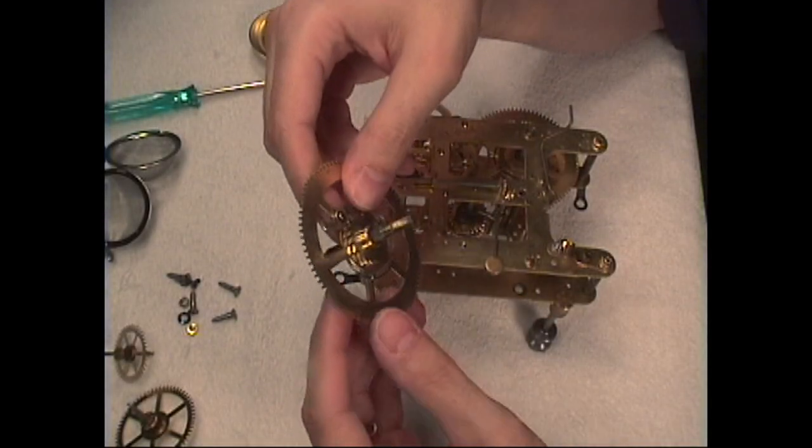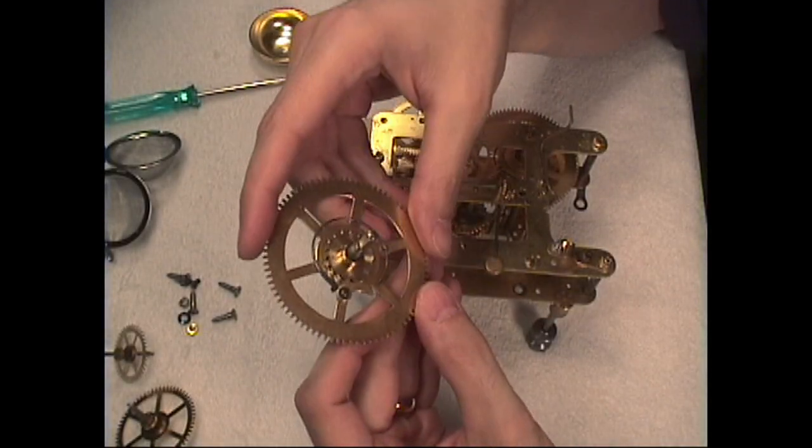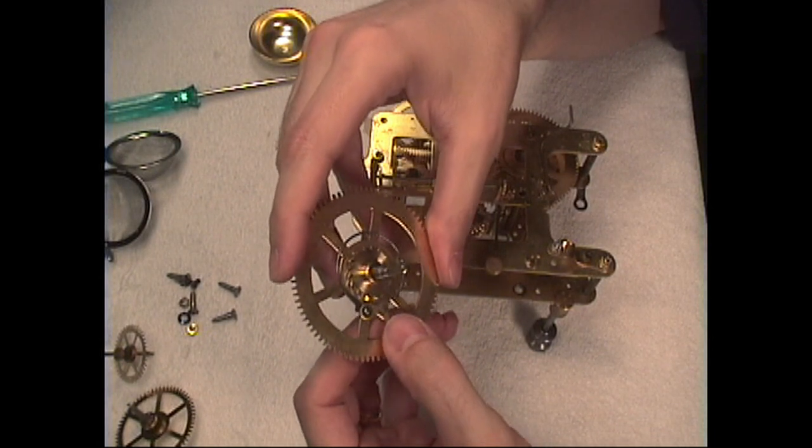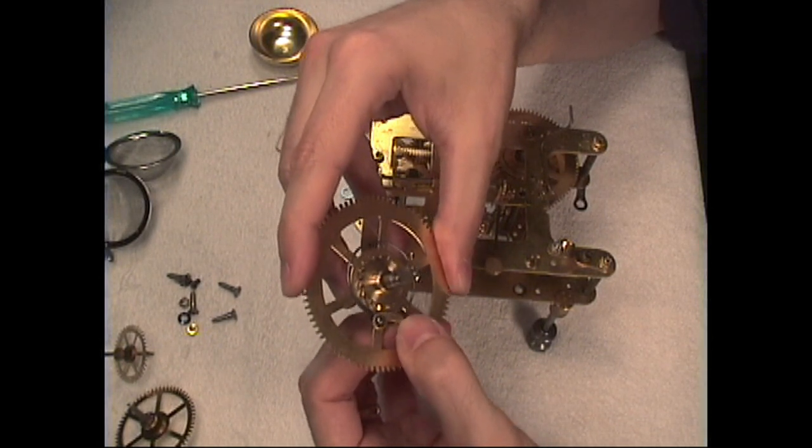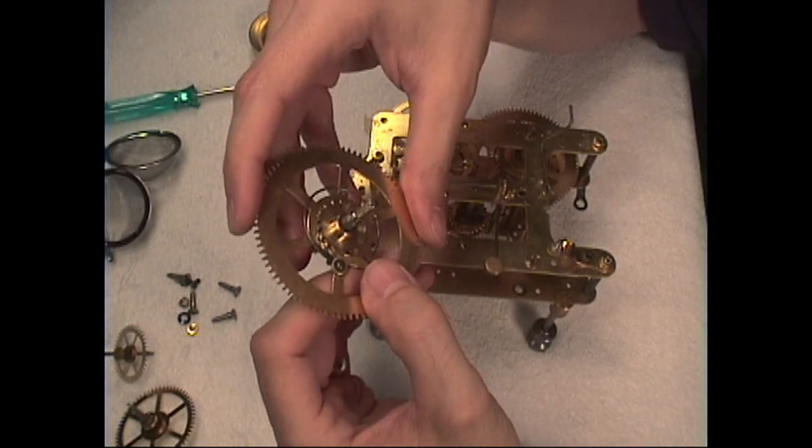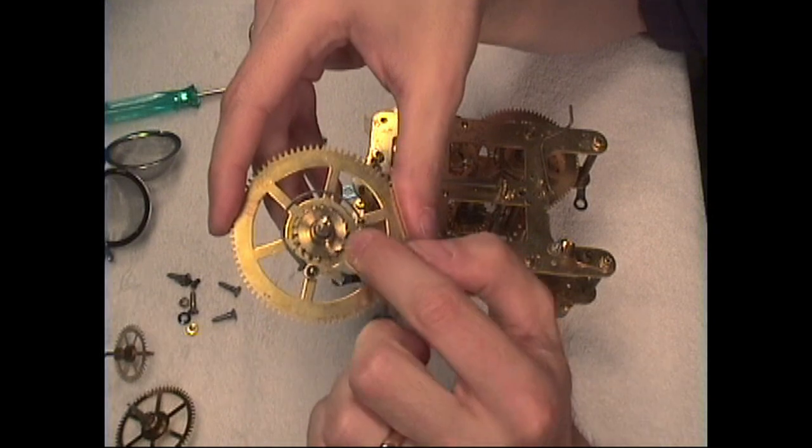There's two things we're going to need to do before we put together the movement. On this particular clock, we're going to need to tighten these clicks because the click on this is very loose, and when you're winding the clock it could very possibly jump the ratchet here.